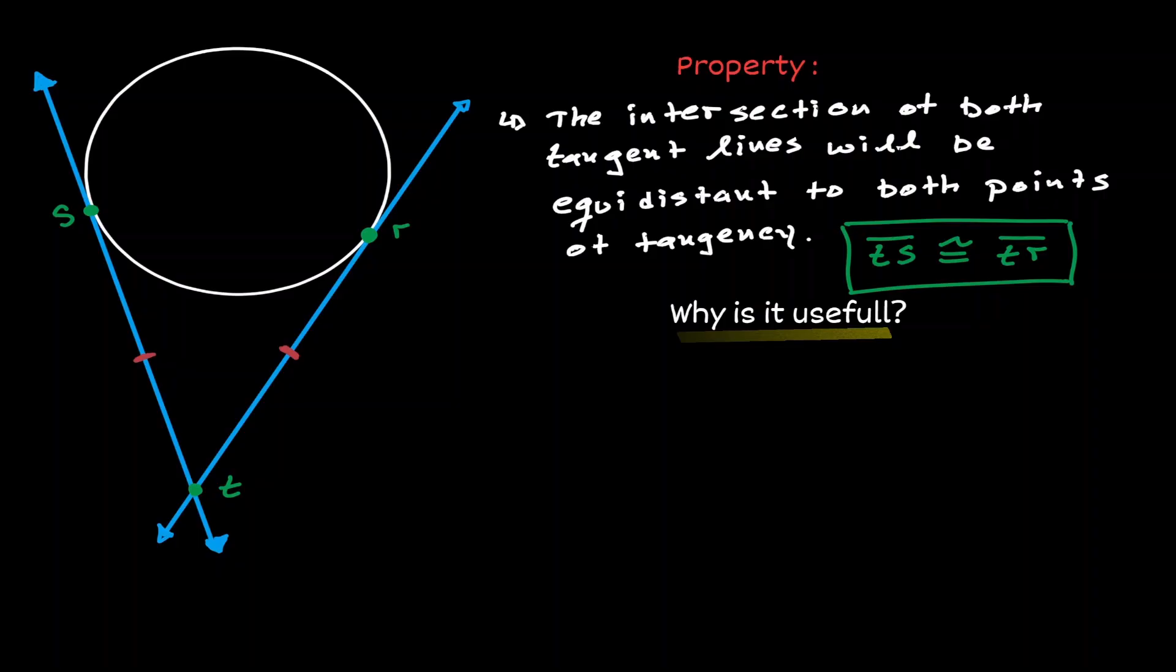But why is this property useful? If we connect the points of tangency, notice that we're going to end up with an isosceles triangle. These two sides are equivalent to each other, and then we just got the third side in our triangle.